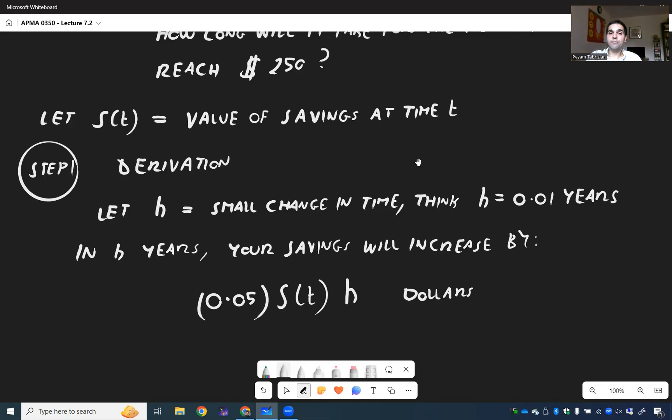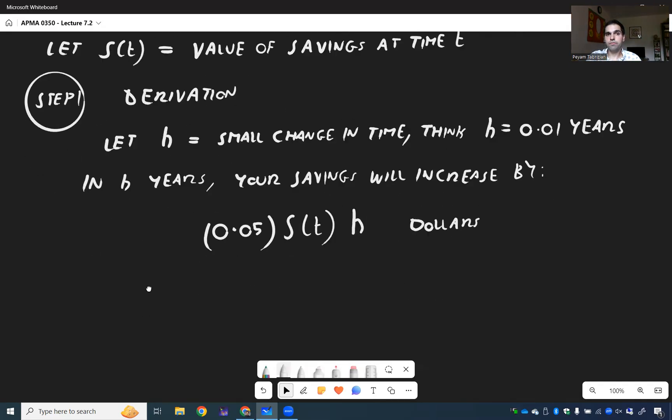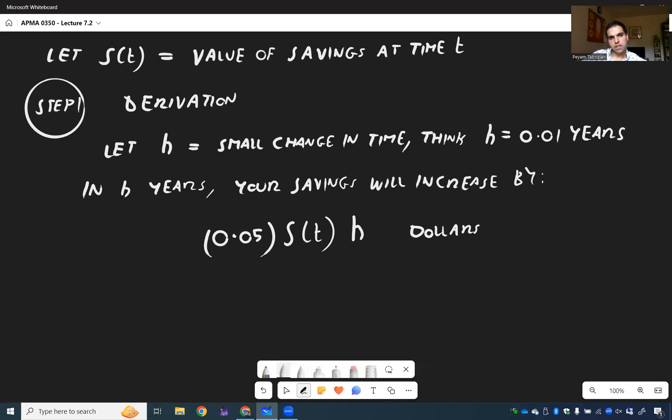So what is the change? It's precisely that. So the change, which, of course, is also the difference between the future and the present. So S(t + h) minus S(t), that is the same thing as 0.05 S(t) times h.